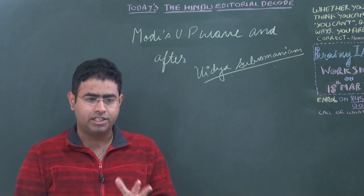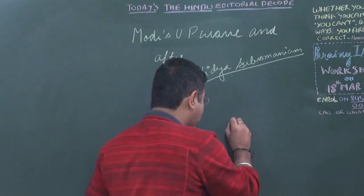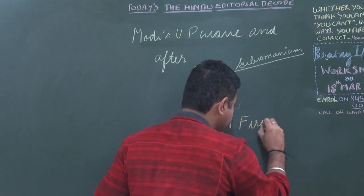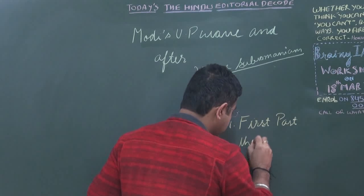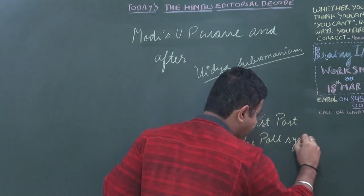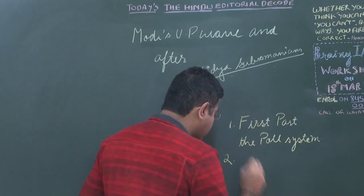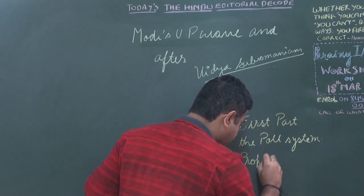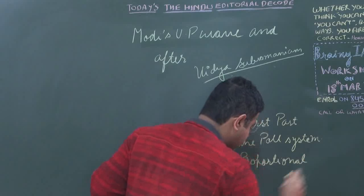In order to understand this editorial, we need to understand two key concepts: first, what is meant by the First Past the Post system, and secondly, what is proportional representation.